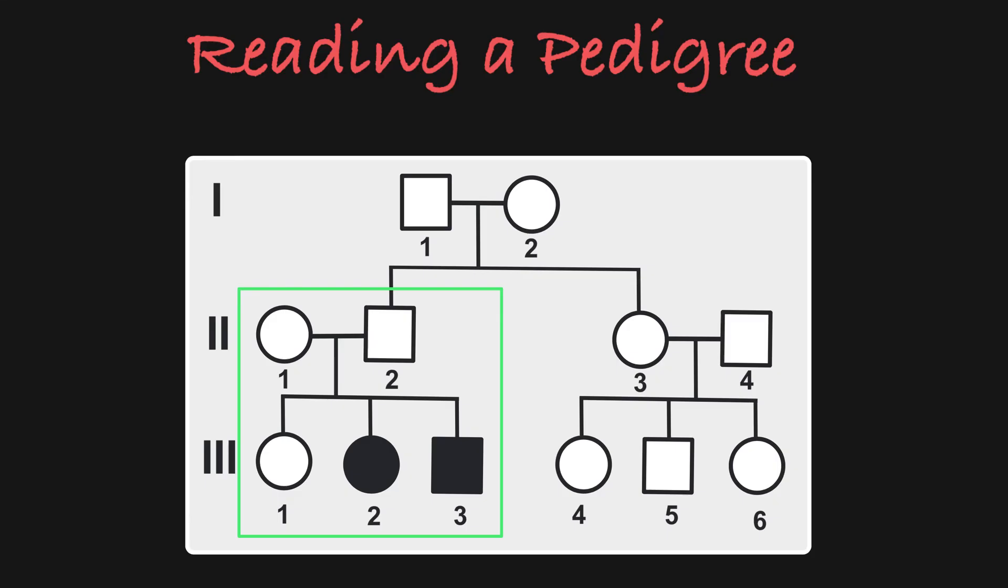Now what we see here is that this female from generation 2 mates with an unrelated male, and they also have three children, a daughter, then a son, then another daughter.